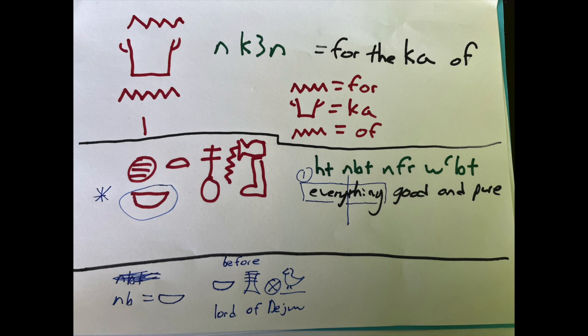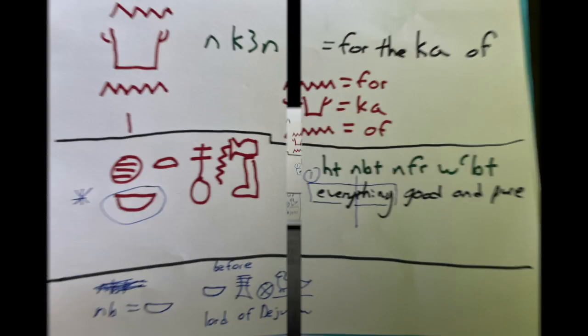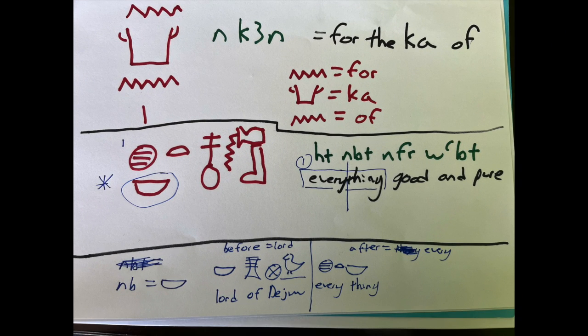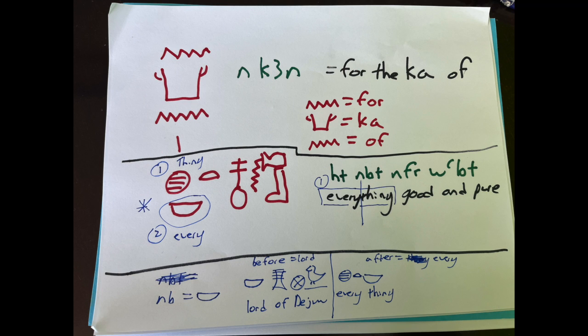So before a place it means lord. Well, before anything it means lord, so if it comes first it's lord, like lord of Djedu, lord of Abydos, lord of my room. If nib appears after the noun, then it's every.